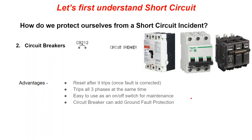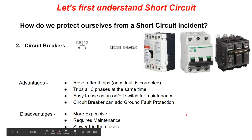Circuit breakers have some advantages over fuses: you can reset after a trip once the fault is corrected, they trip all three phases simultaneously, they're easy to use as an on/off switch for maintenance, and they can add ground fault protection. The disadvantages are that they're more expensive, require maintenance over time, and they're slower to trip than fuses.